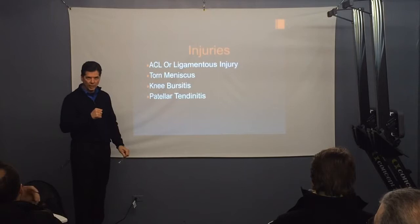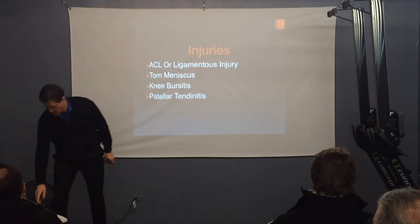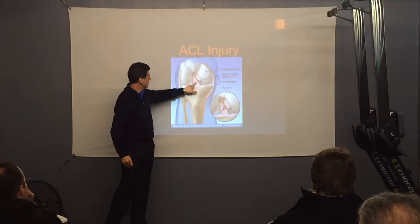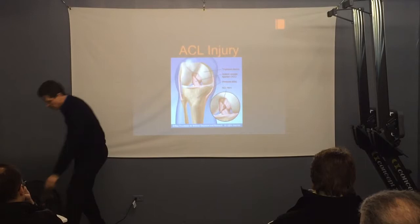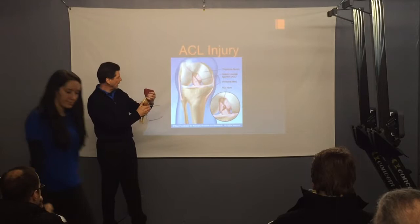If someone's trying to lift too much weight and push really hard against something, it can cause inflammation there as well. ACL — anterior cruciate ligament — that's what it looks like when it's a little torn. So you can see in the knee, the ACL is inside, behind the kneecap.